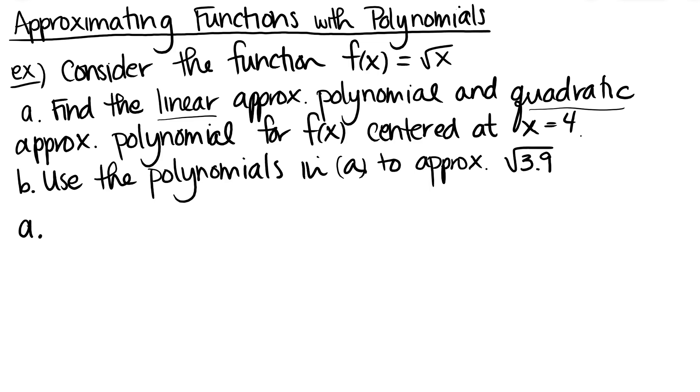So let's look at part A. Find the linear approximation polynomial and the quadratic approximation polynomial for f of x centered at x equals 4. So basically, if we put this in terms of Taylor polynomials, we want a Taylor polynomial of order 1 and a Taylor polynomial of order 2.